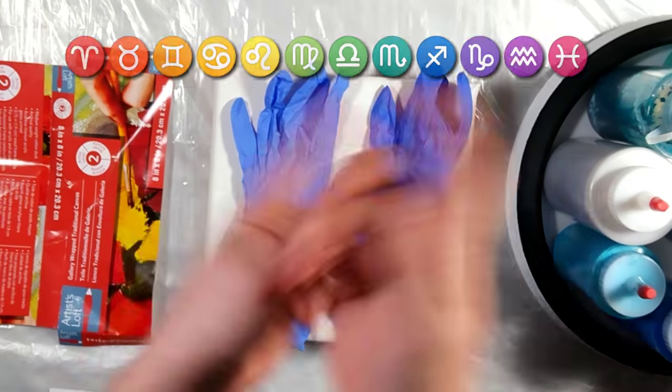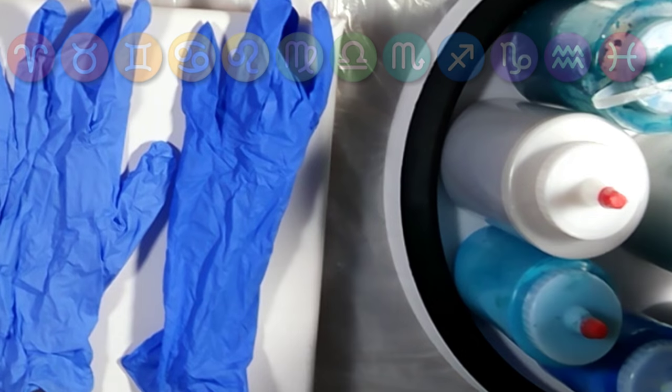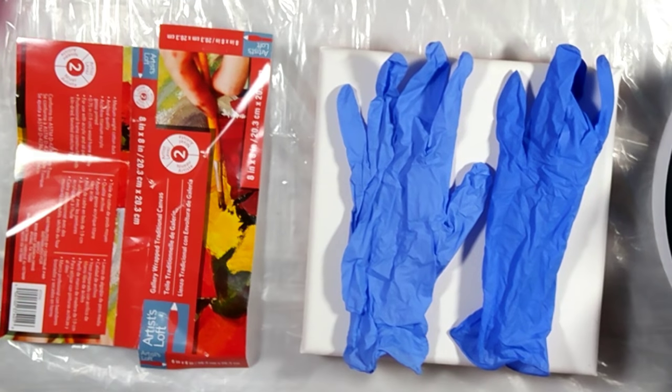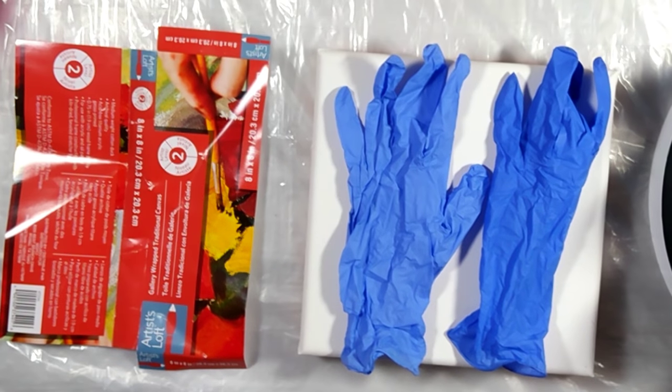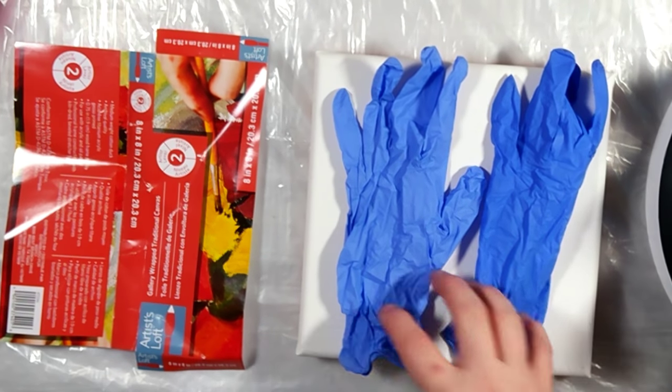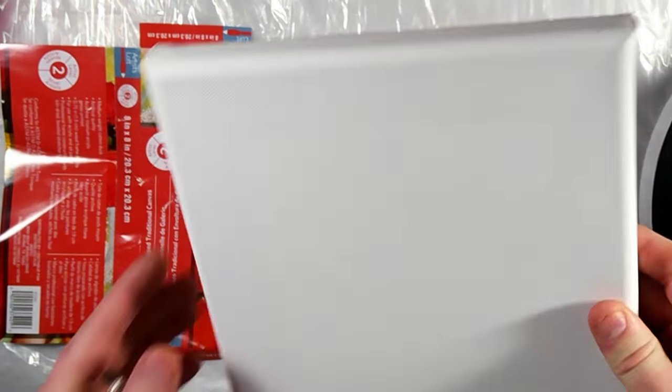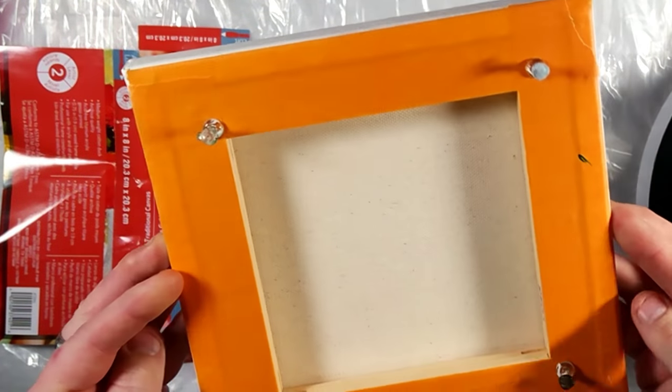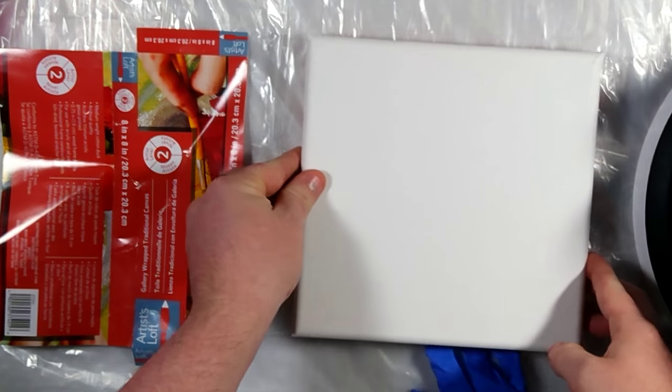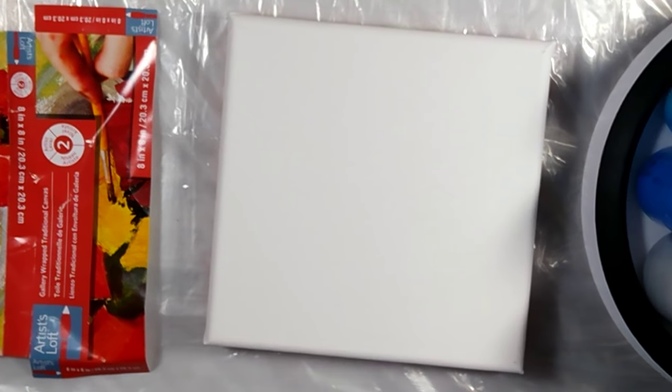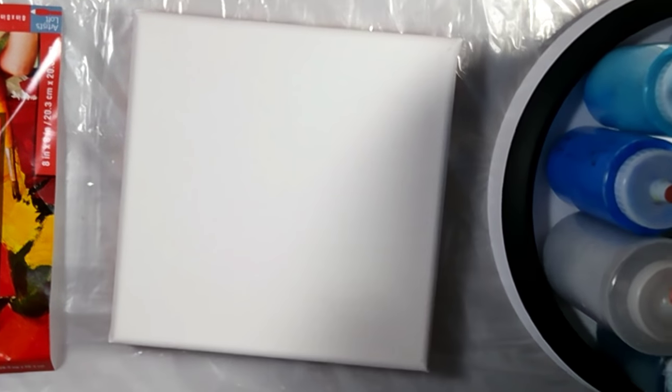We are looking at the zodiac today and picking colors based off of your zodiac and a pour style based off your zodiac. I pulled out this 8x8 gallery wrap, so this is going to be the canvas I am using today. I did some research already and pulled out some colors and I'll go over them to get started.